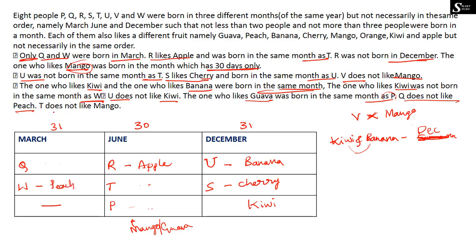The next clue says T does not like mango. Since mango and guava are both in June where P, R and T are placed, and R already likes Apple, T cannot like mango — so P must like mango. Since the person who likes guava was born in the same month as P, and P likes mango, guava belongs to T. Therefore T likes guava.